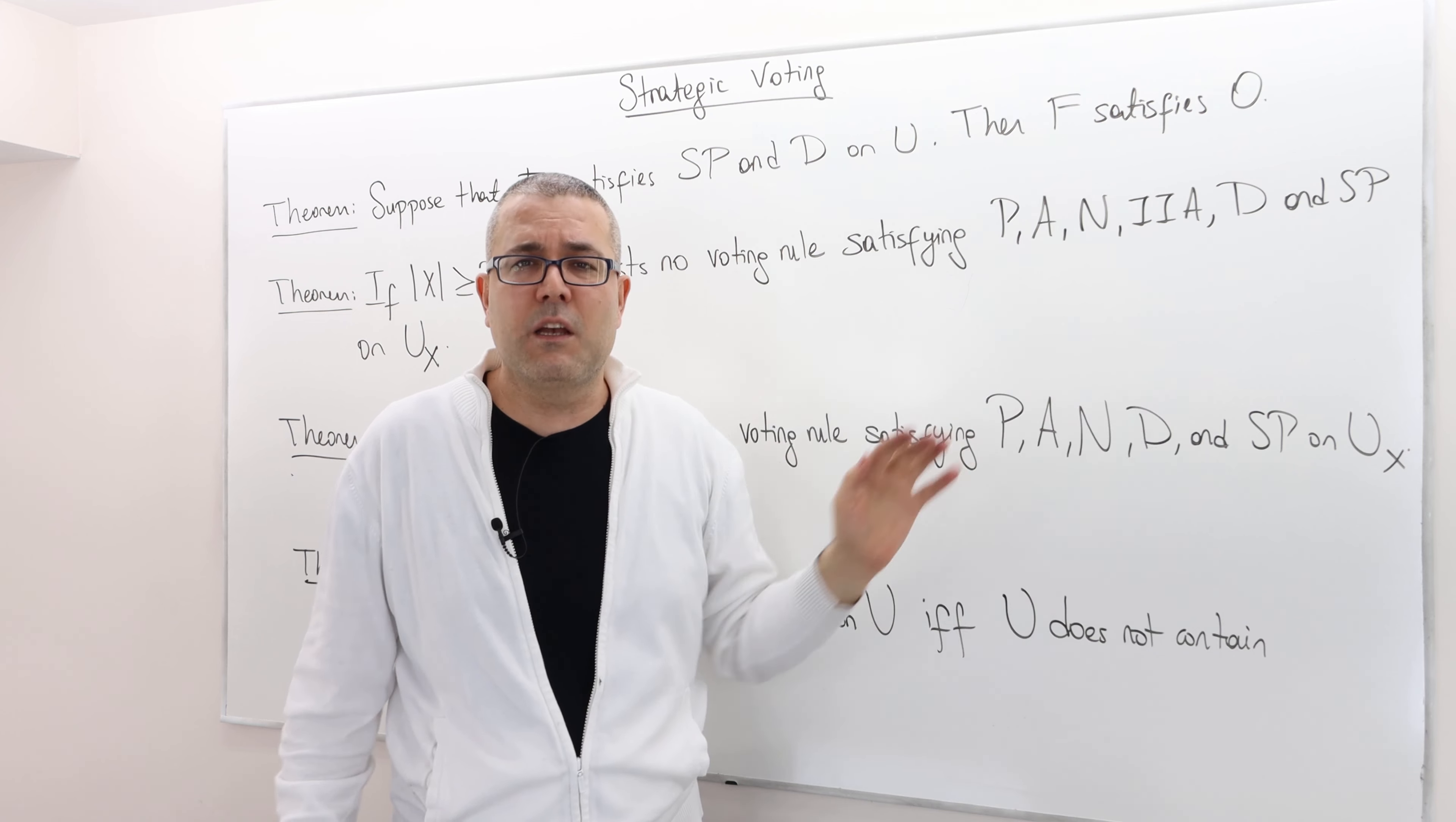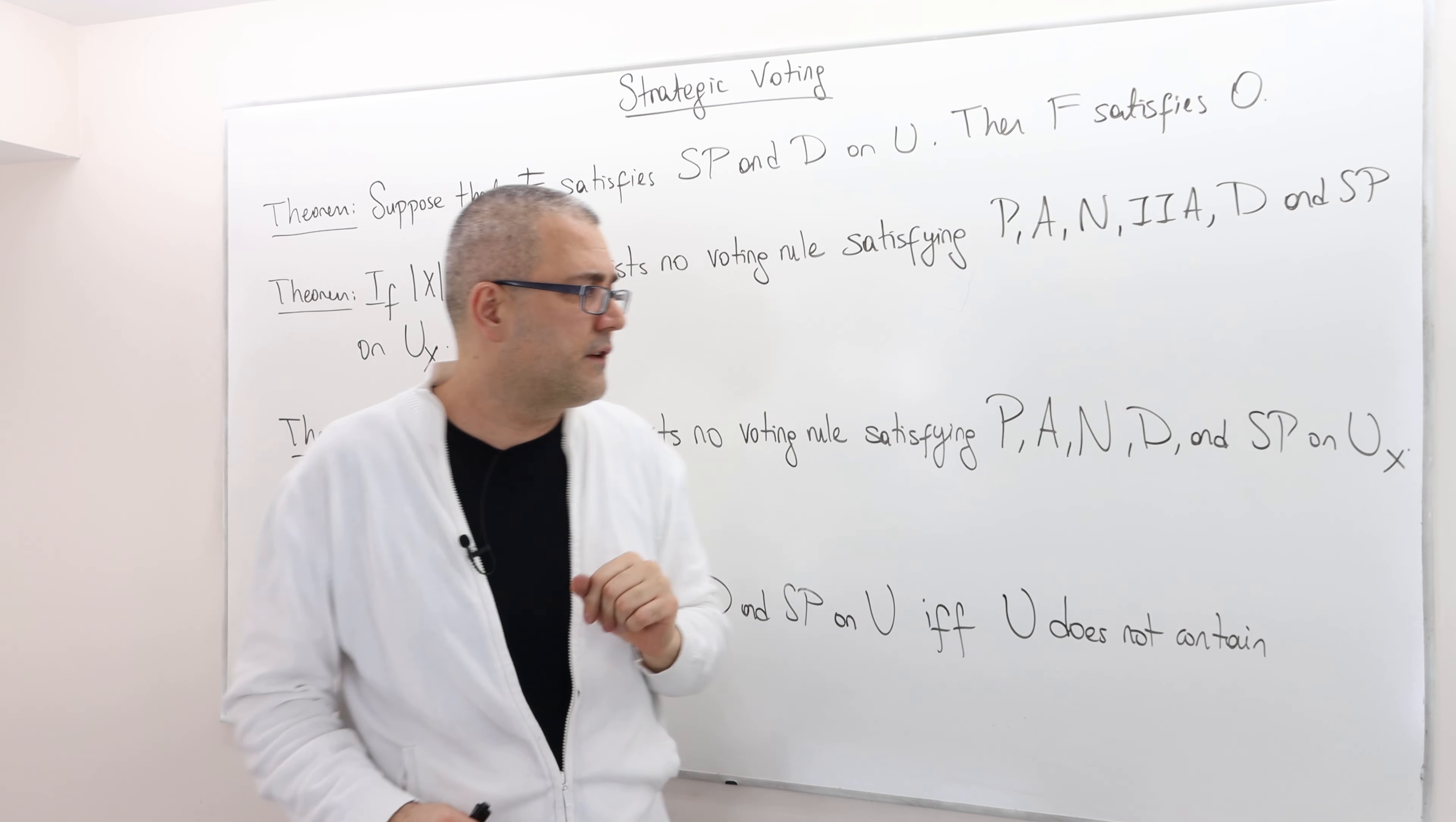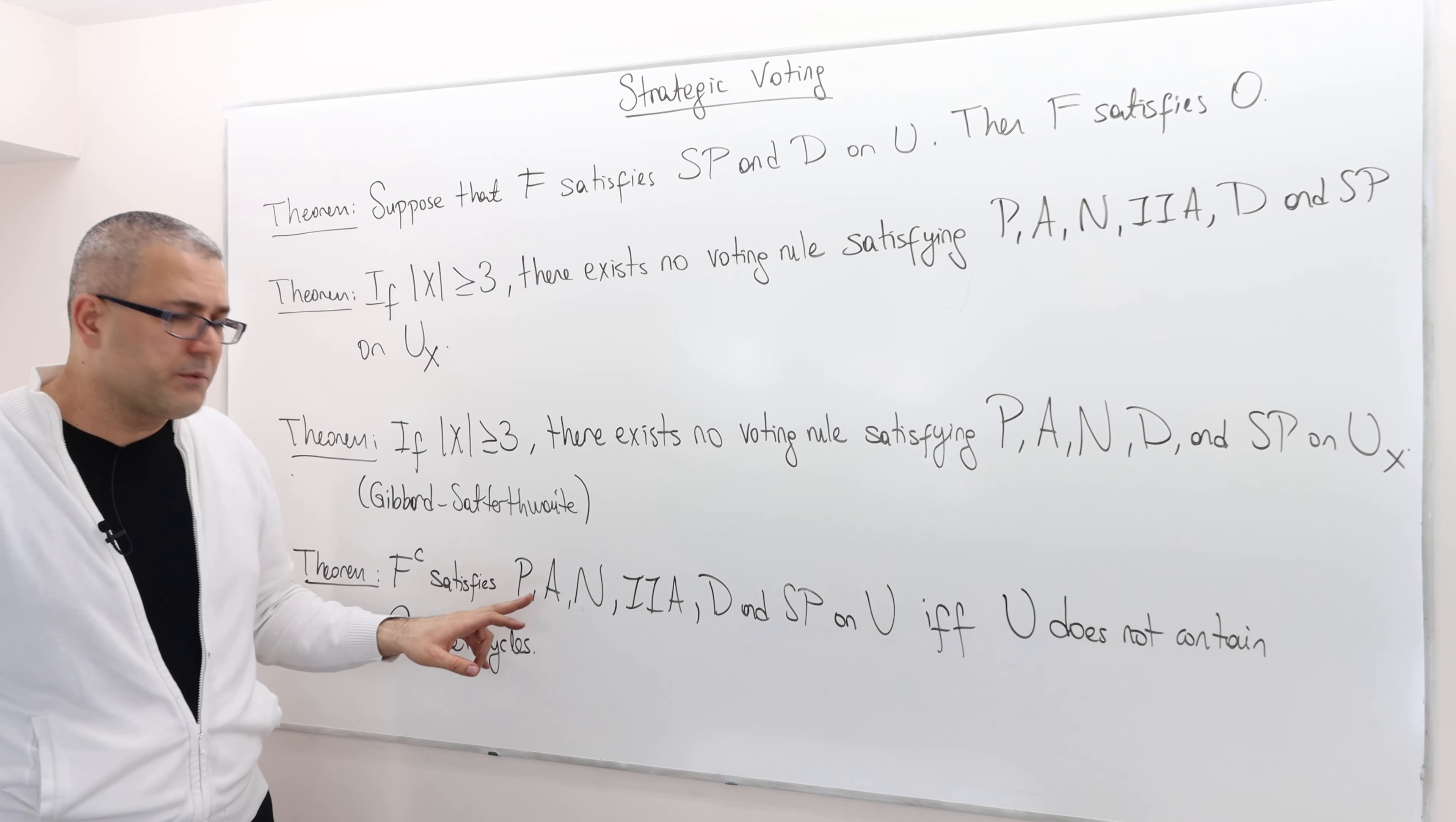You either have to get rid of some of those assumptions or you have to narrow down the preference domain. Well, here's what we do. We narrow down the preference domain for example. Remember this is the majority rule or the Condorcet rule. FC satisfies all those six axioms principles, Pareto principle, anonymity, neutrality, IIA,